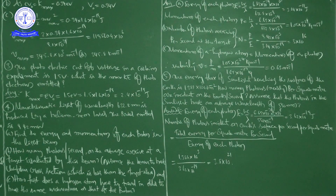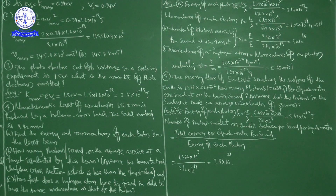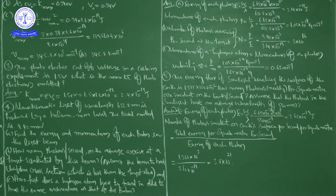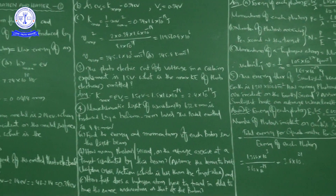So 3.8×10²¹ photons are incident on the Earth's surface per second per square meter. This problem is an application to daily life — sunlight and the Earth's surface. This helps us think and solve related problems in our own way.